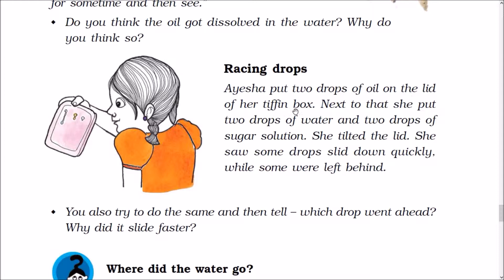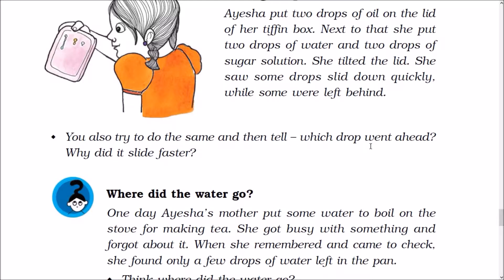Aysa put two drops of oil, two drops of water, and two drops of sugar solution on the lid of a tiffin box. She tilted the lid and saw the drops from up high. Which drop went ahead? Why did it slide faster? The drop of water went ahead. Drops of oil and sugar syrup stuck to the tiffin box.